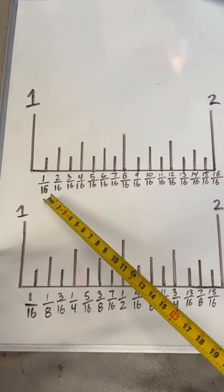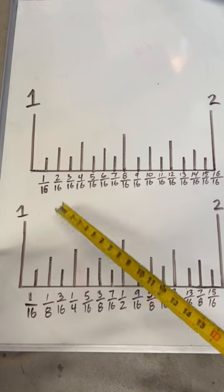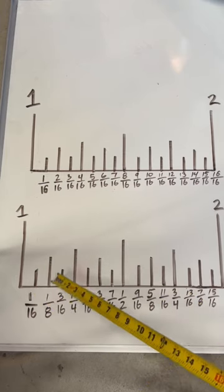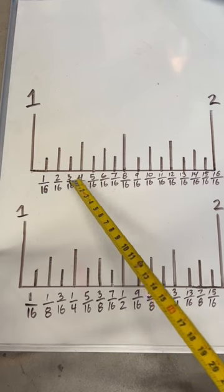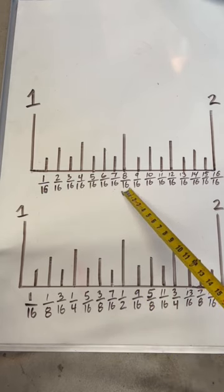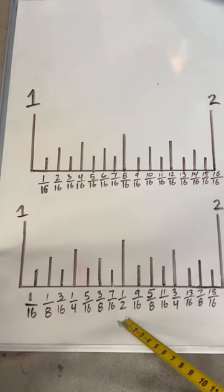So we got one sixteenth that cannot be simplified so that stays the same. Two sixteenths we break that down to one eighth. You'll notice four can go into 16 four times so that's one quarter. Eight can go into 16 two times so that's one half.